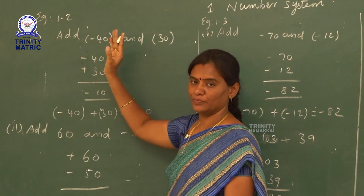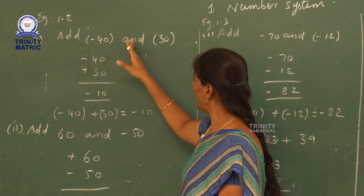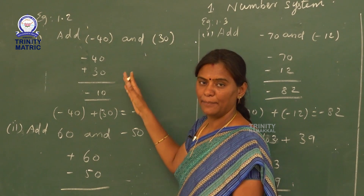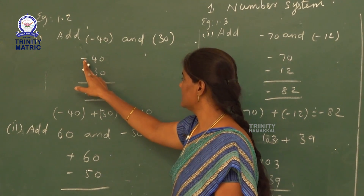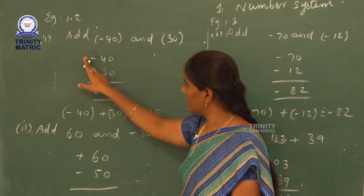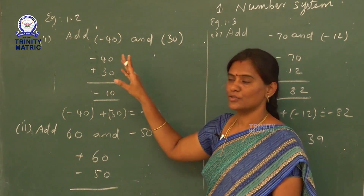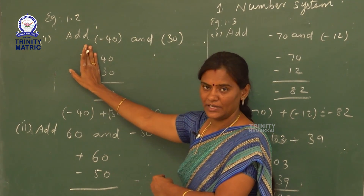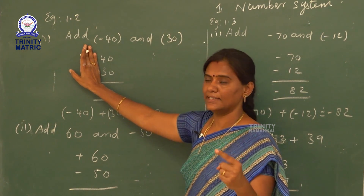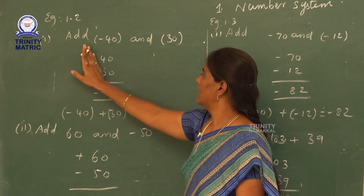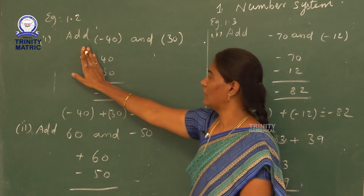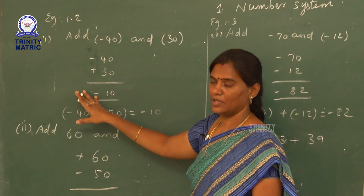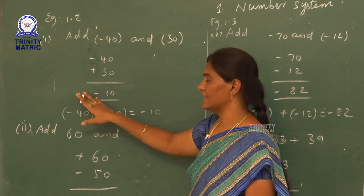Next, example 1.2. Now we add minus 40 and plus 30 using the direct method. Here the signs are different. So we find the difference between the two numbers. The difference between 40 and 30 is 10. The greater number is 40 and in front of 40 we have a negative sign. So the answer is negative — minus 40 plus 30 is minus 10.